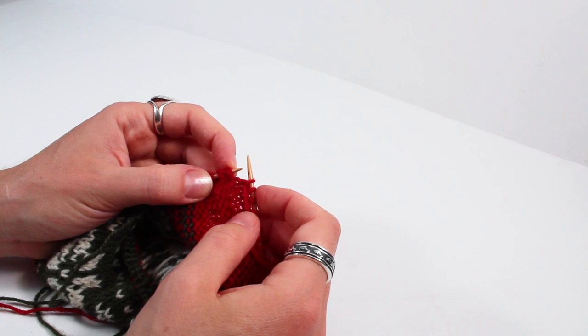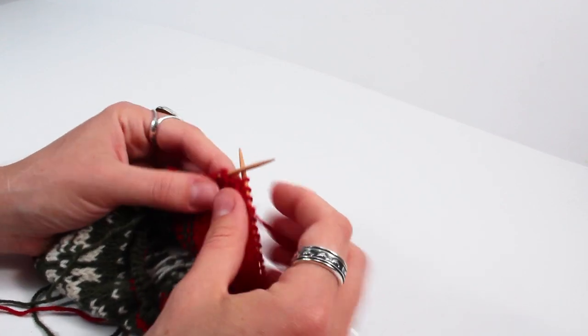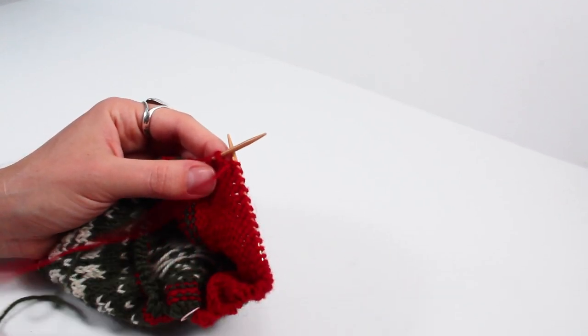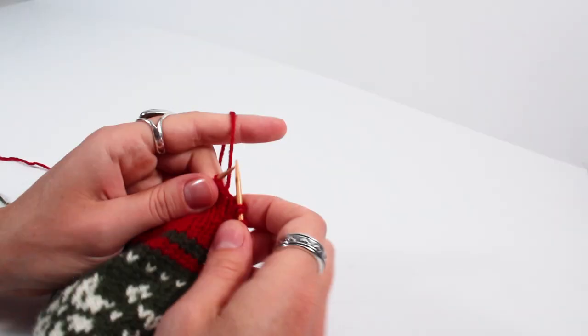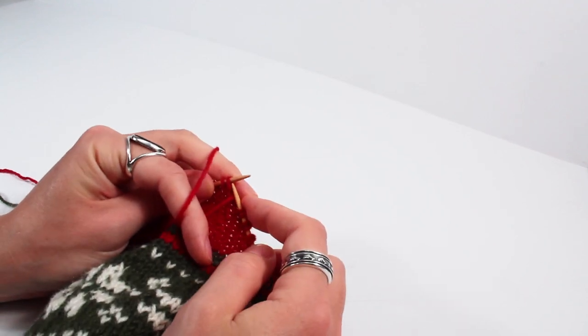When you get to that point once again you will turn the work. And on the knit side you will bring the yarn forward as you did on the purl side.